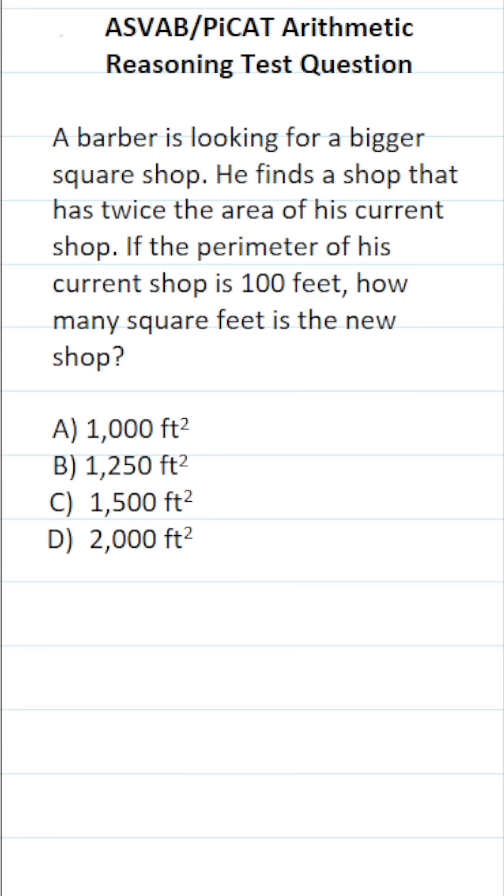So let's start with the fact that his current shop is in the shape of a square and has a perimeter of 100 feet. Squares have sides that are all equal, and we typically refer to the side length of a square as S. So if this side's S, all these other sides are S.